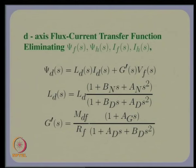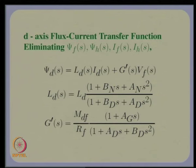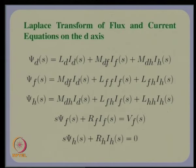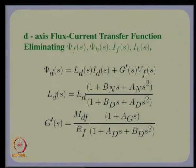Taking the Laplace transform gives these equations. By eliminating psi_f(s), psi_h(s), i_f(s), and i_h(s), we get a transfer function relationship between psi_d, i_d, and v_f(s), where v_f(s) is the field voltage — the voltage applied to the field winding. There is an additional differential equation corresponding to d(psi_d)/dt which we shall write down shortly.